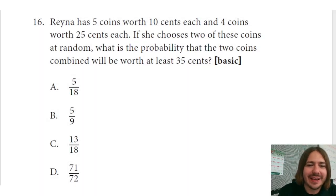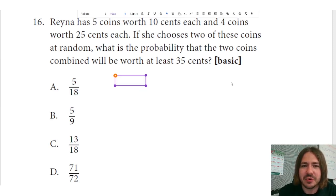Hey y'all, welcome back. Number 16 says Reina has five coins worth 10 cents each and four coins worth 25 cents each. I'm not sure why they don't just come out and say it. I guess they don't want to assume that you know what coins are worth 10 cents and what coins are worth 25 cents, but I mean come on, let's simplify this first sentence and just say that she's got five dimes and four quarters.